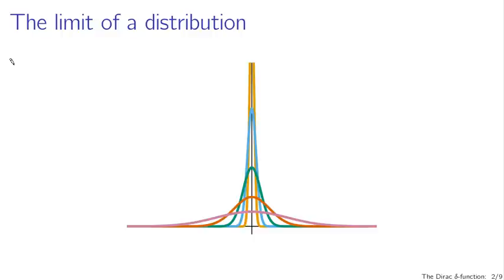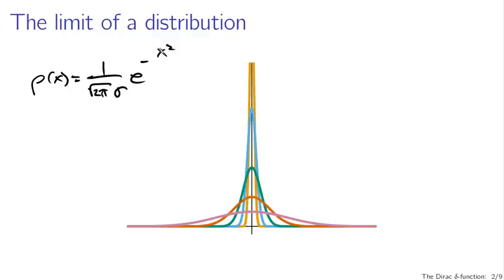What I want you to think of when you think of the Dirac delta function is the limit of a distribution. The Gaussian distribution, for example: rho of x is given by 1 over the square root of 2 pi sigma, times e to the minus x squared over 2 sigma squared. The limit as sigma goes to 0 of this function gives you something very much like the delta function.